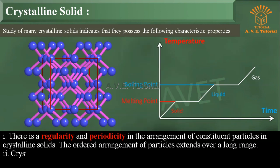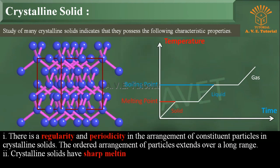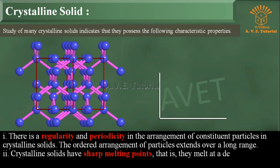Two: Crystalline solids have sharp melting points, that is, they melt at a definite temperature.